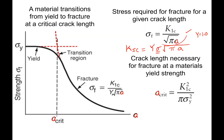If we plot this fracture stress as a function of crack size a, as a gets smaller and smaller we need a larger and larger stress to cause fracture. If we keep going along this curve, eventually the curve gets higher than the yield strength of the material — that's the point at which fracture stress equals yield strength and our mode of deformation switches over to yielding.